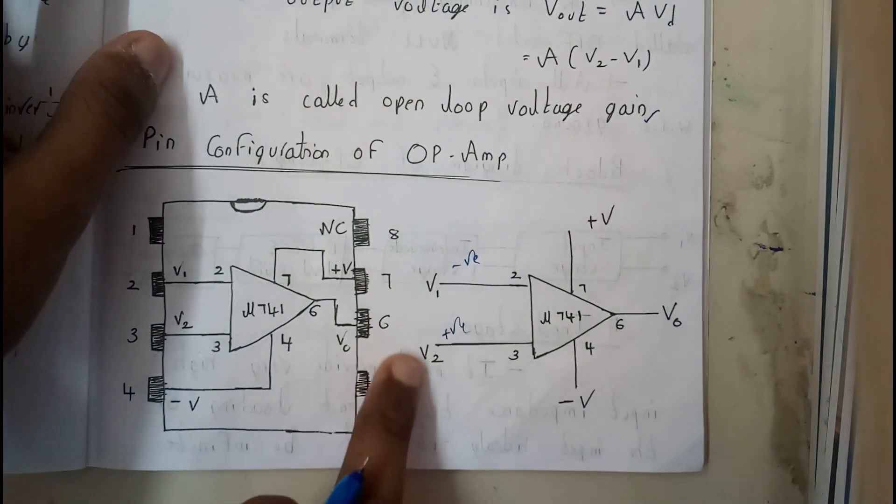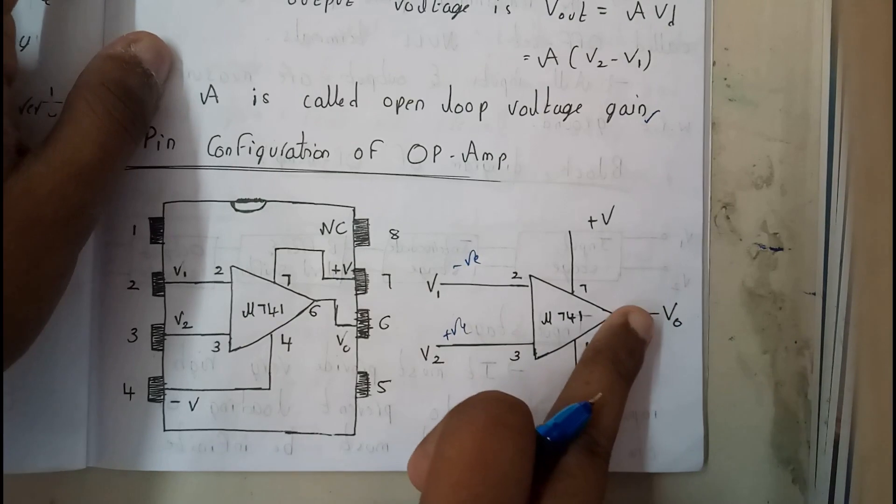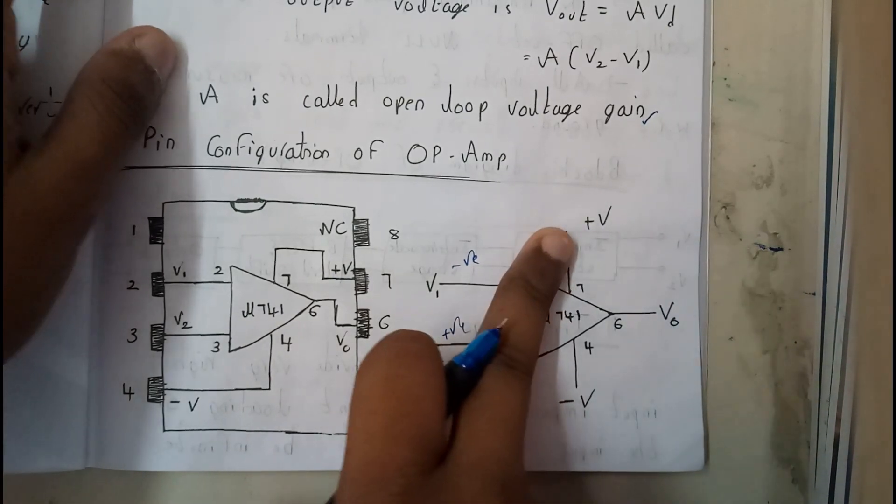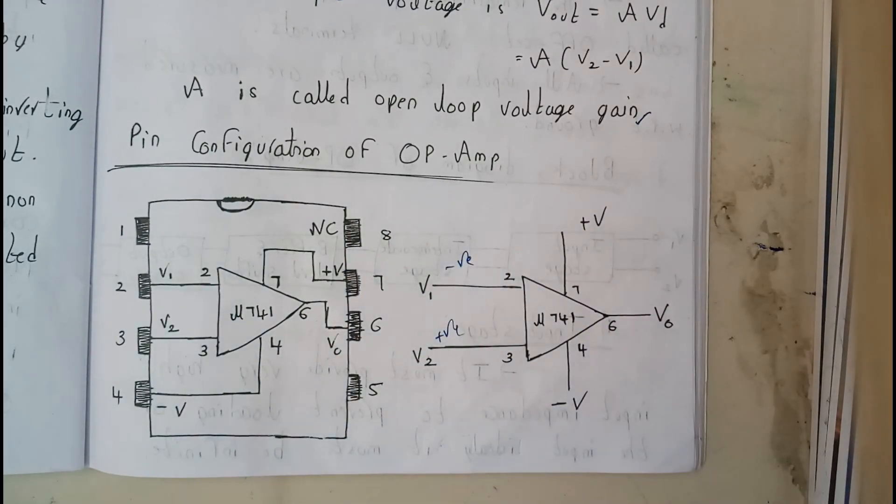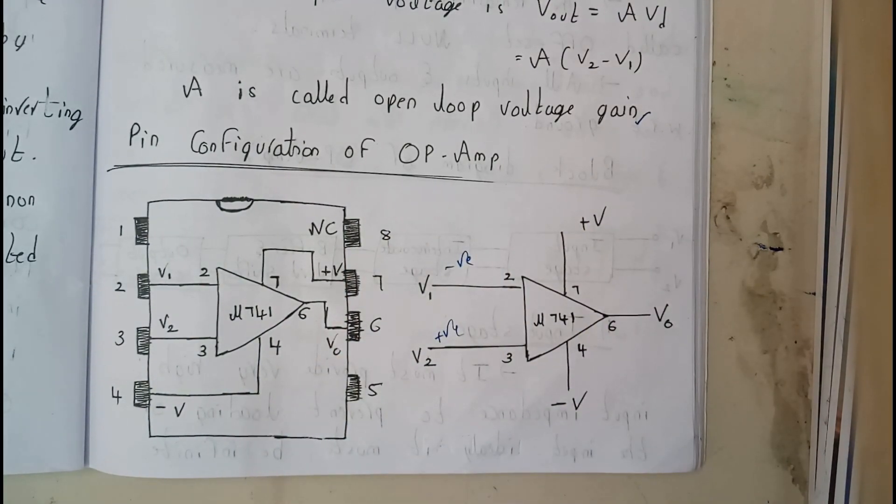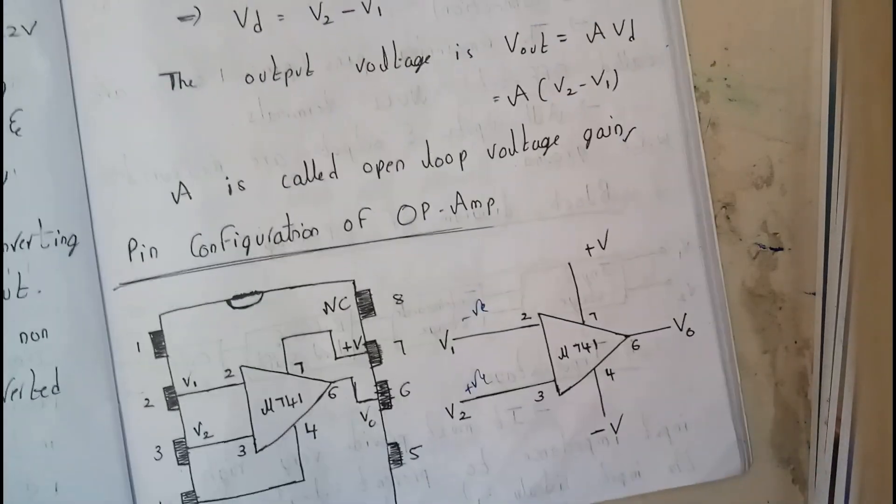And our seventh pin will be plus volts. So two, three, four, five is out, six, seven. That's how our pins are divided. So I have just wrote all that I have discussed now in terms of points as all about pin configuration of an operational amplifier.